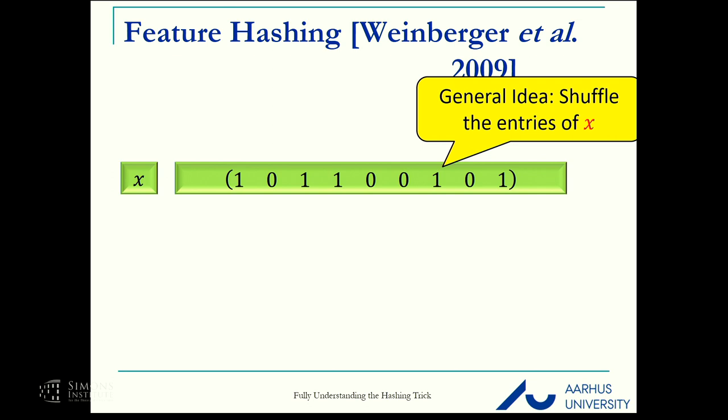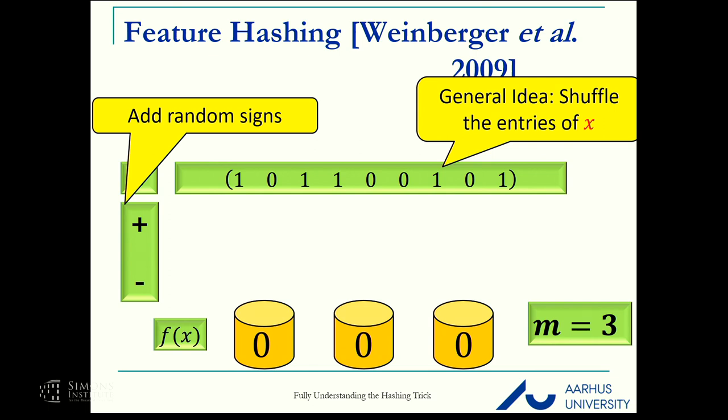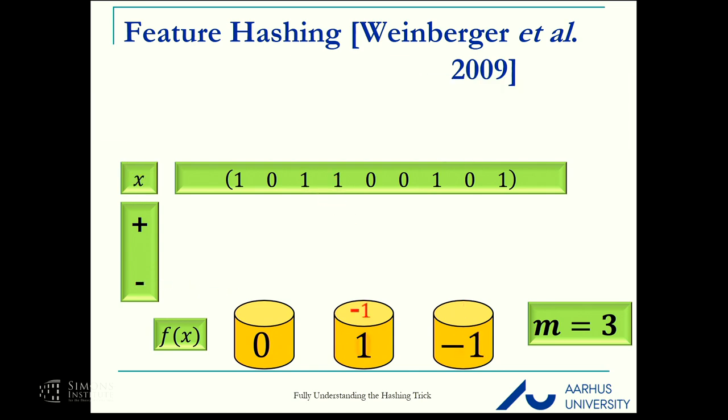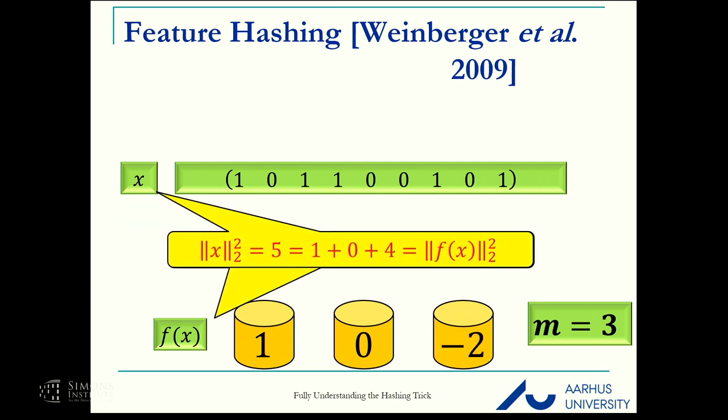The idea is this: you take a vector x and you shuffle it with random signs. Let's assume m is three. We take each coordinate, each entry of x, assign it with a random sign and put it in a random bucket. We continue doing that.